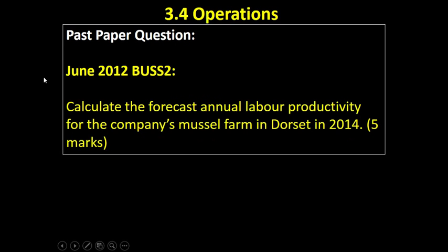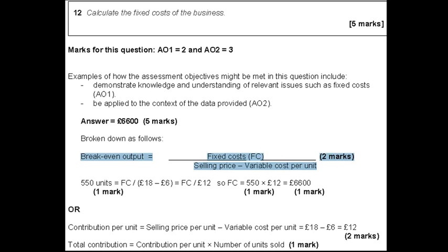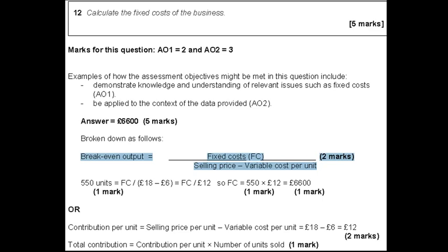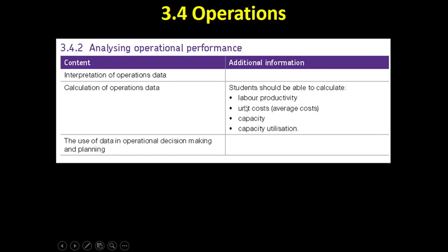I don't have a calculator so I won't work that out now — you can do so if you want. I just want to draw your attention to this point from the new specification mark scheme: you can achieve two marks out of five simply for writing down the formula. Looking at the 2016 mark scheme, a four-mark calculation question offered one mark just for writing down the formula. So it's really important, if you ever get a question on labour productivity, to write the formula — that secures you a minimum of one mark. That's labour productivity; next time we'll look at unit costs.